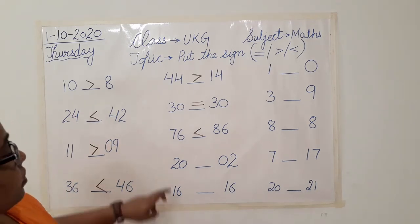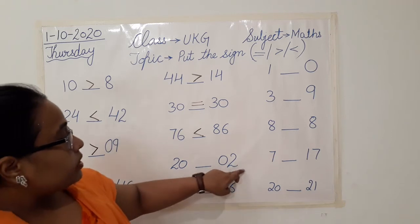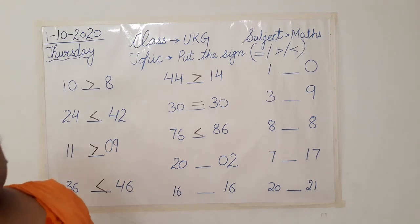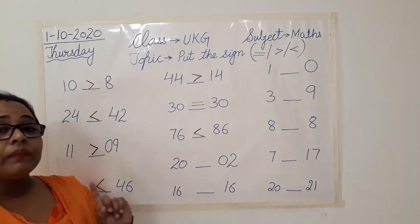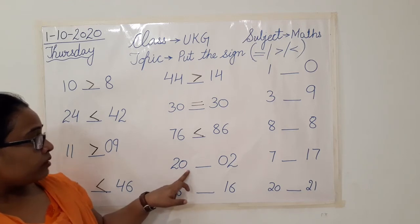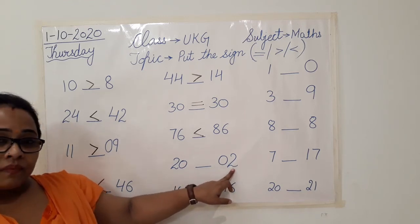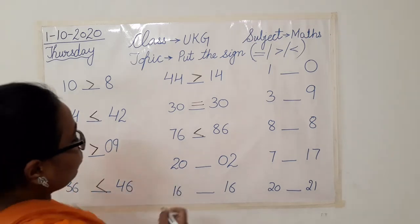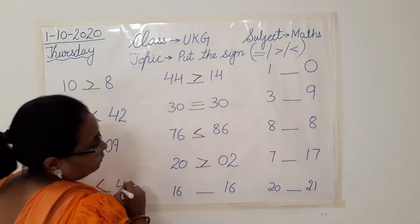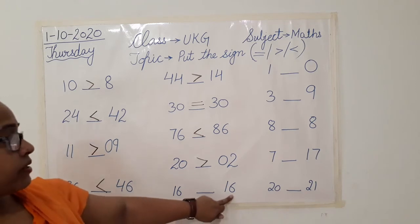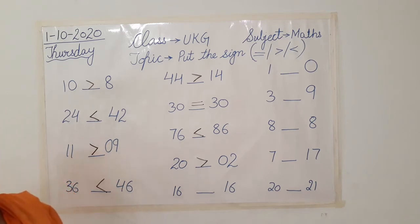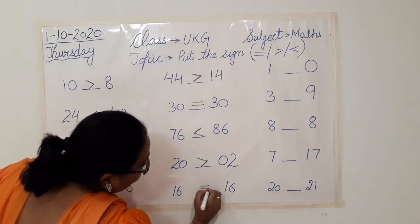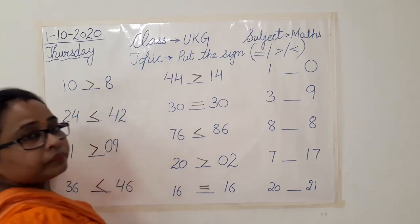Next we have twenty and zero-two. So we have zero-two here and twenty here. Compare the places — tens and ones. Twenty is greater. So we will put this mark. Now again sixteen and sixteen — both sides we have sixteen. They are equal to each other, same number. So we will put the equal to mark like this.